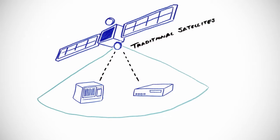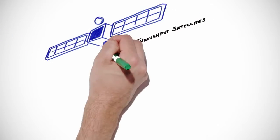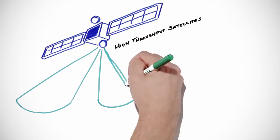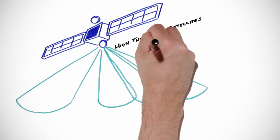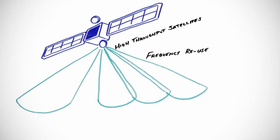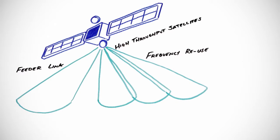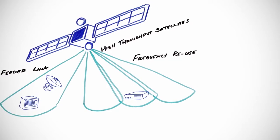By contrast, high throughput satellites employ multiple spot beams to increase capacity through a process called frequency reuse. A dedicated high bandwidth feeder link is required to serve the spot beams. Hub infrastructure must be located within the feeder link to serve all the spot beams.